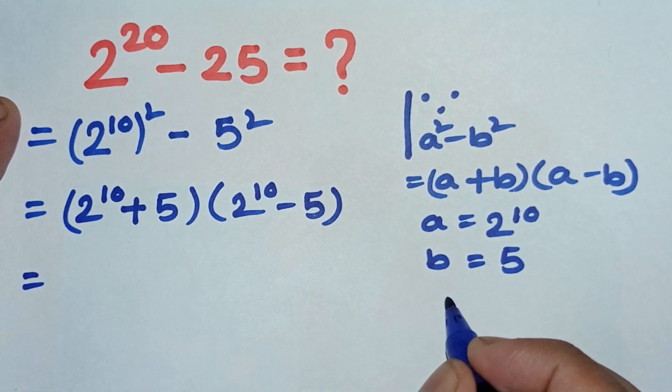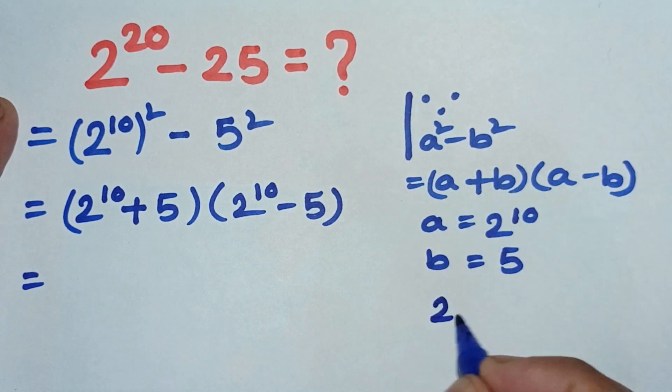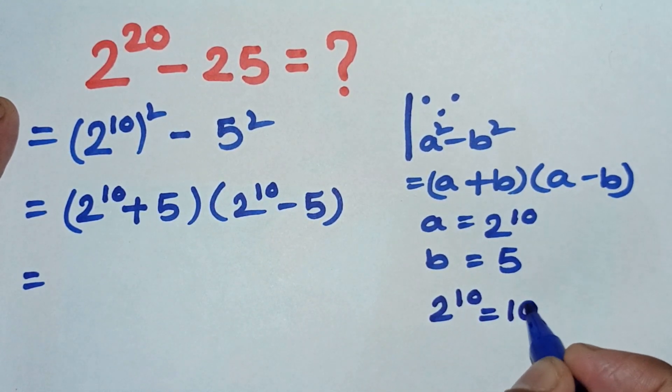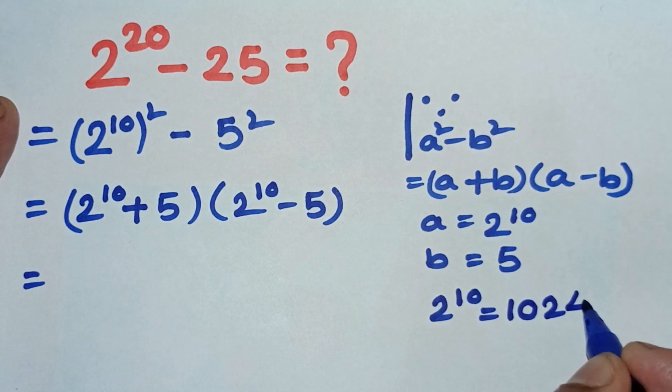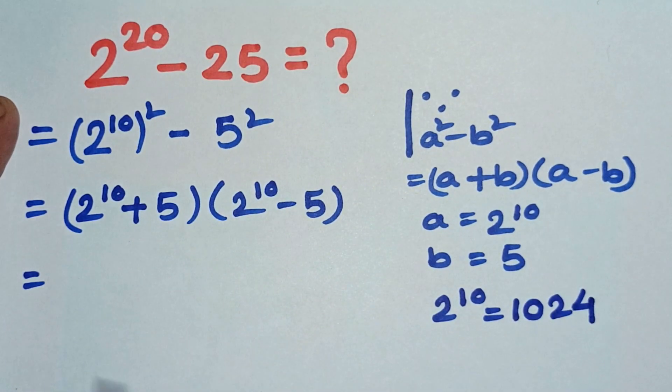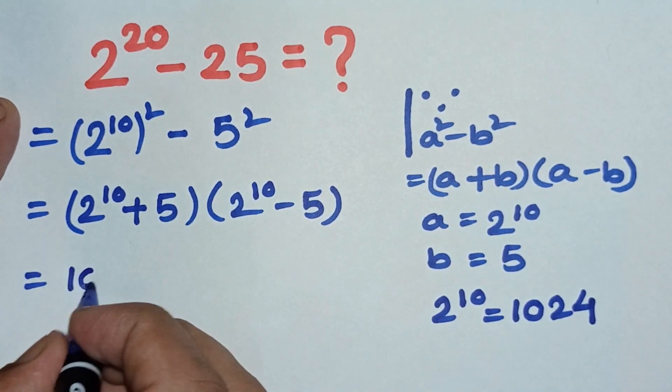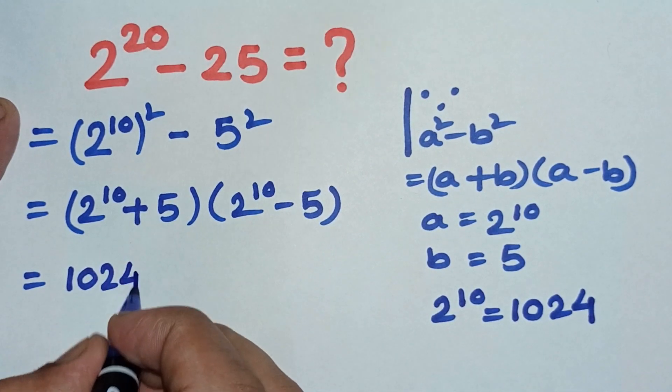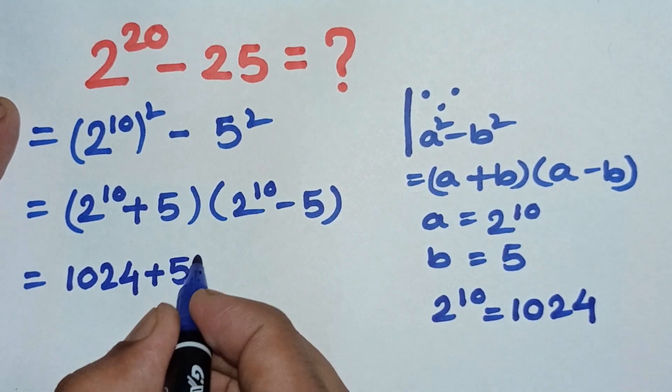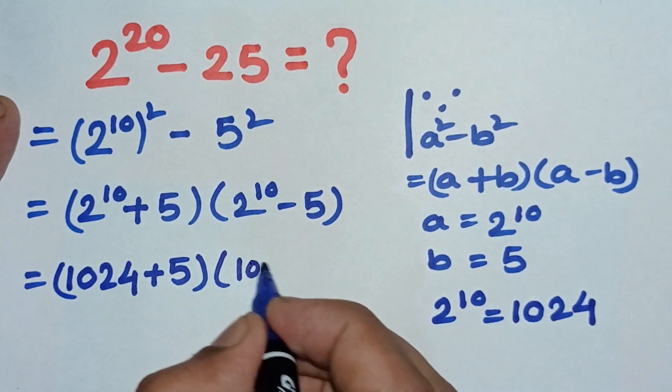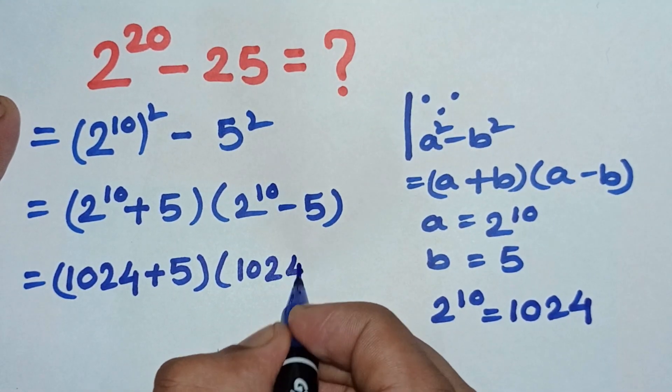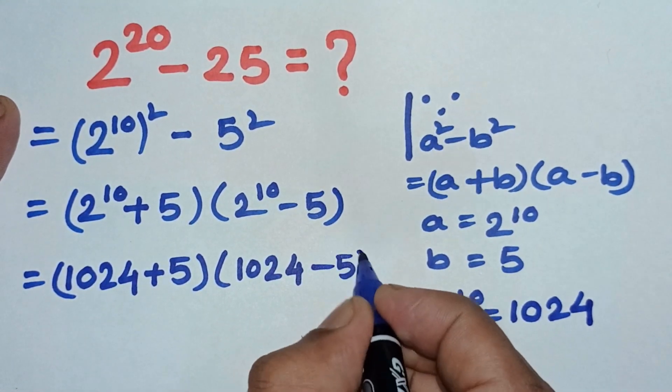I know 2 to the power 10 equals 1024, so 1024 plus 5 into 1024 minus 5.